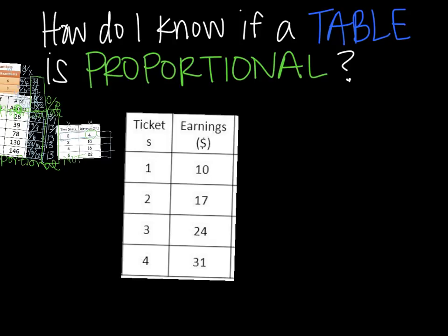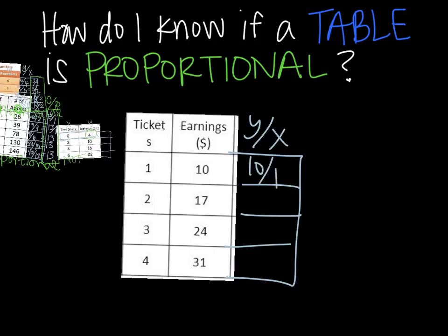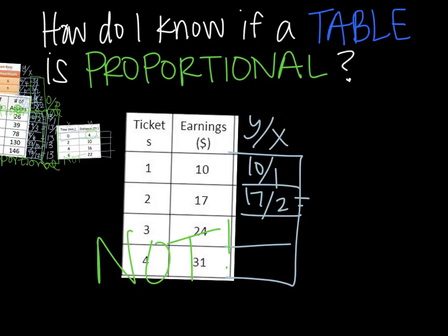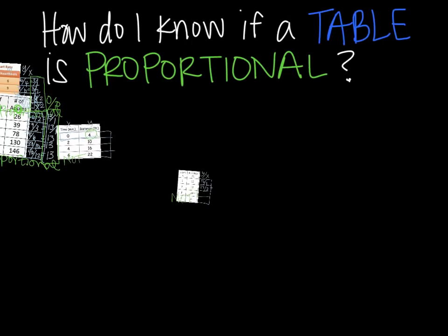Next one. Okay? Extend out that table. Again, I need y over x. So 10 over 1 is just 10. 17 over 2. Ooh, that's not going to simplify to 10. So I can stop right there. This is not proportional. Sometimes you will have to go through the entire thing. But sometimes you don't.